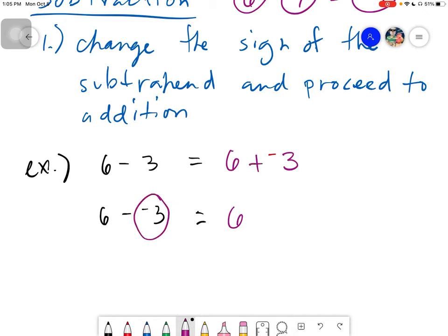Going back here, that's negative 3 so it becomes 3 with the sign of positive and proceed to addition. So that's the rule when it comes to this given. You have to change the sign of your subtrahend and proceed to addition.